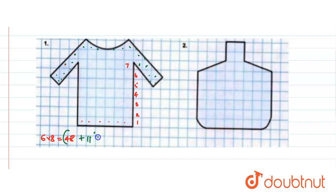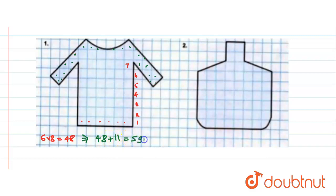So 48 perfect squares plus 11 partial squares. This is equal to 48 plus 11, which gives us 59. Therefore, the area of this first figure is 59 square units.